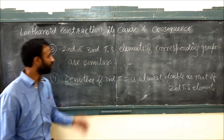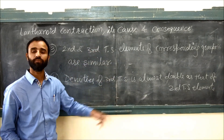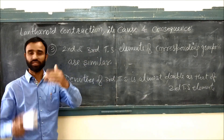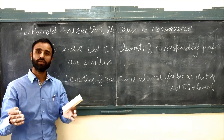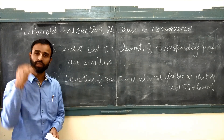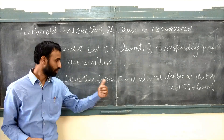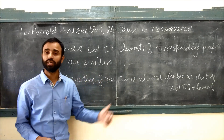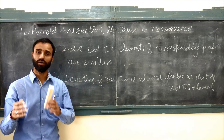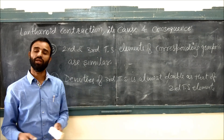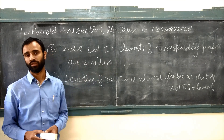Because when we go from the second to the third transition series, their size is almost the same, but atomic mass is almost double. That's why the densities of third transition series elements are almost double those of the second transition series.